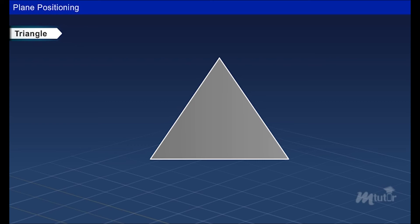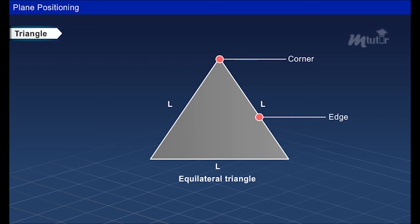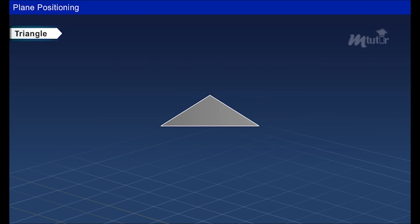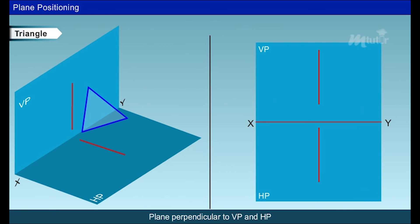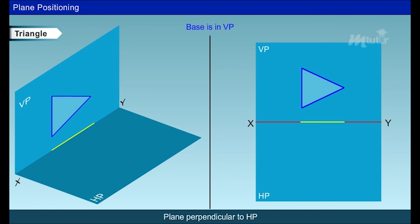A triangle has three edges and three corners. If all three sides or edges are of equal length, it is called an equilateral triangle. If two sides of the triangle have equal length, it is called an isosceles triangle. If the triangular lamina stands on one of its sides on the HP and the lamina is parallel to VP, it can be placed in the principal plane as shown. If the triangle is perpendicular to both planes, it can be drawn as shown. When the triangle is perpendicular to HP and its base is in the VP, it can be drawn as shown.